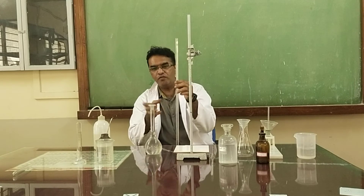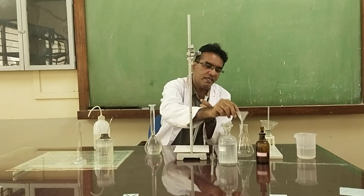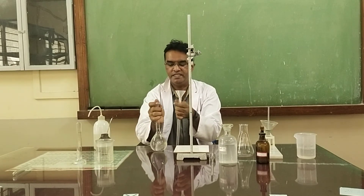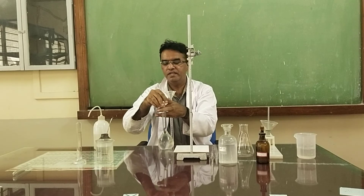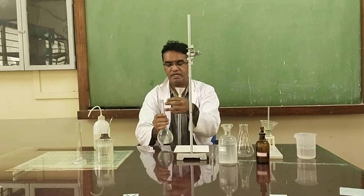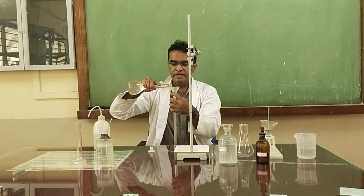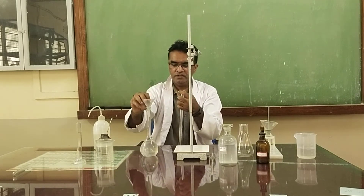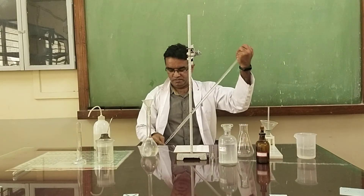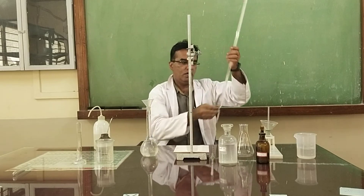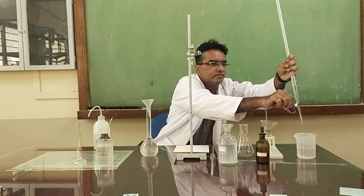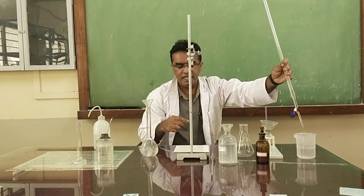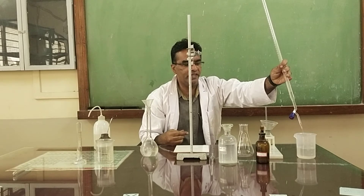Once the solution is prepared, fill it into the burette. This burette has already been rinsed with water — now rinse the burette with the standard solution of EDTA, then fill the burette with the same standard solution of EDTA. Take a small amount of the EDTA solution, rinse the burette with it, then throw away that rinse solution.